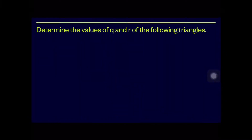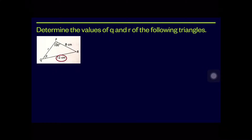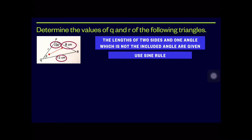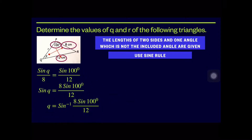Let's look at another example: determine the values of q and r of the following triangle. From the diagram, side lengths of 12 cm and 8 cm are given along with one non-included angle. Therefore we use the sine rule. To find angle Q: sin Q/8 = sin 100°/12. Solving this gives angle Q = 41.04°.